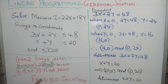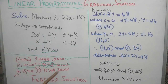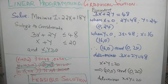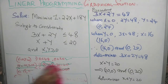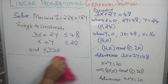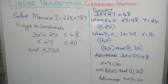When x equals 15 and y equals 15, this gives 75 which is more than 48, and 30 which is more than 20 — both constraints are violated, so neither is feasible. A feasible solution is a solution which satisfies all the constraints simultaneously. In any linear programming problem, our first stage is to find a feasible solution.